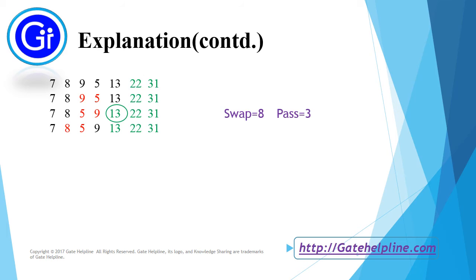In pass 4 we check for 8 and 5. 8 and 5 are not ordered, so we swap them and consider it as swap 9. So item 9 is at its bubble position. So our pass 4 is completed.